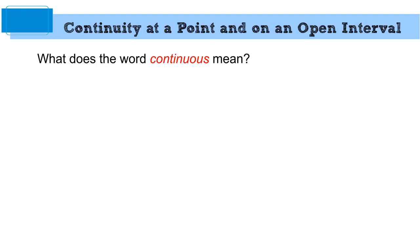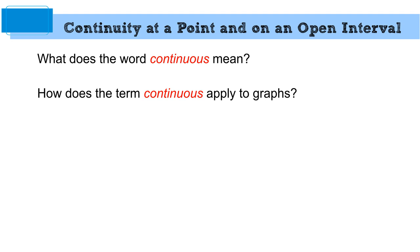Okay, Abby, what does the word 'continuous' mean? 'Never ending' — do we like that? Sure, yeah, love it. Abby, how does that apply in a graph? It's like when the lines have arrows on them. It's like it's on the line.